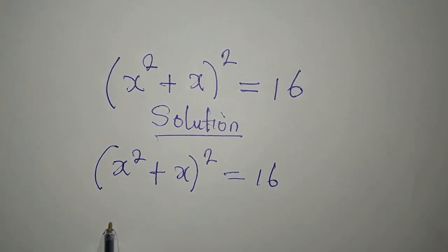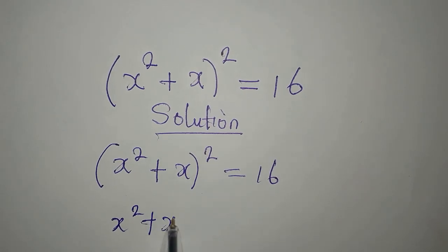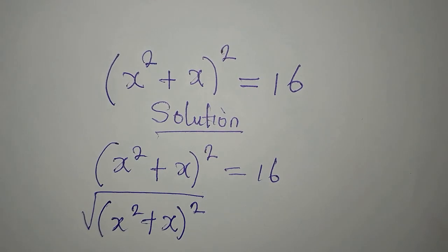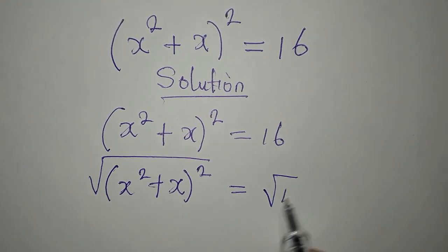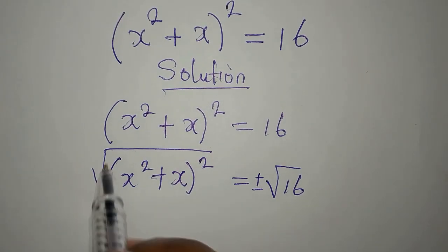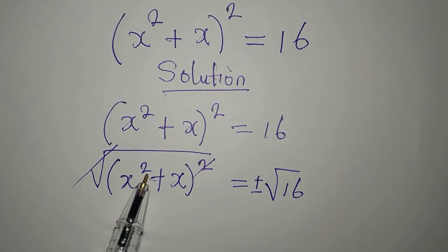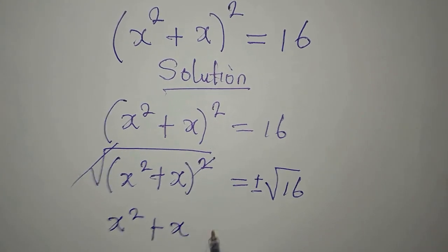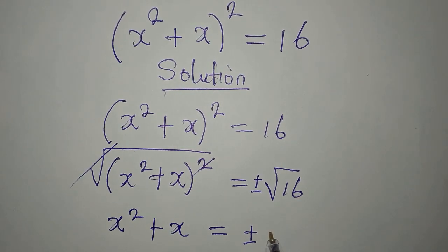So we're going to have x squared plus x to the power of 2 — take the square root of this. Then on the right hand side, we take the square root of 16, but it can be positive or negative. Now this square and this cancel, so the square is still there on the remaining term. So we have x squared plus x, and it's equal to plus or minus square root of 16, which is 4.